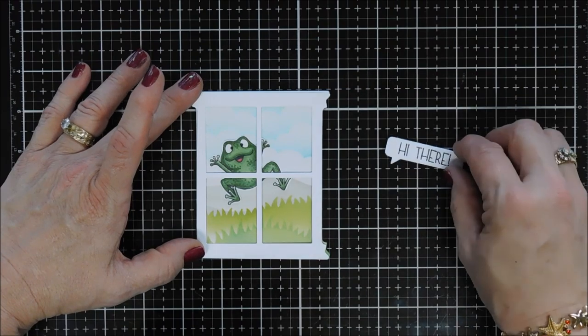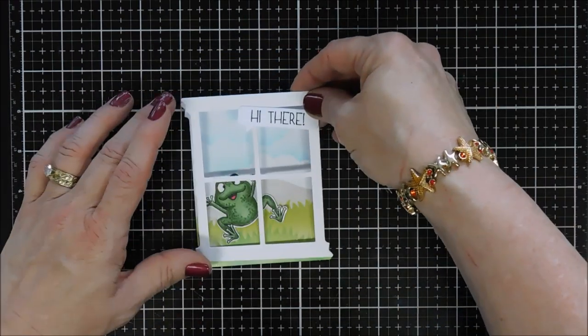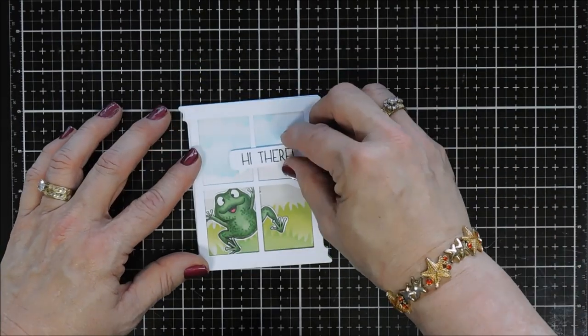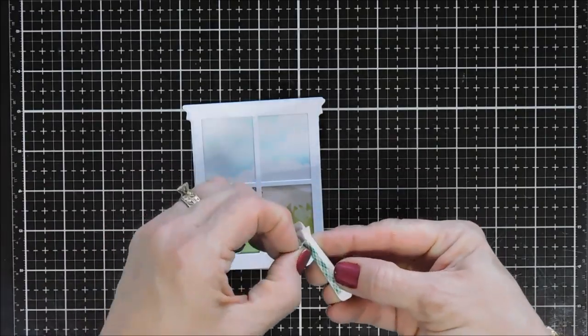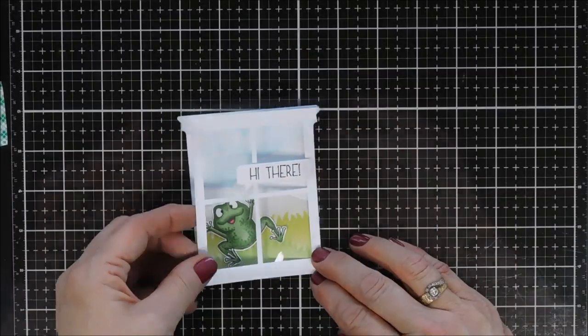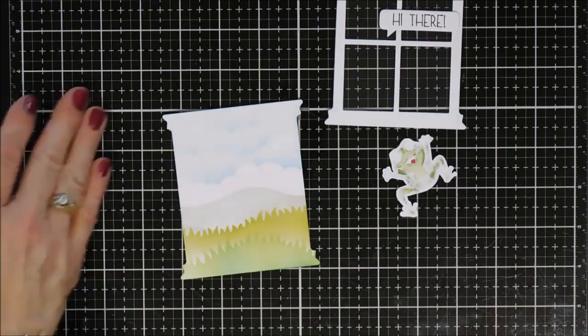I'm gonna kind of play around with my placement. I think my froggy is a little too high so we're gonna lower him and then we're just gonna remove the release paper and stick our sentiment down to our little window pane.